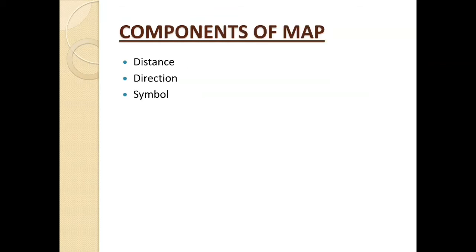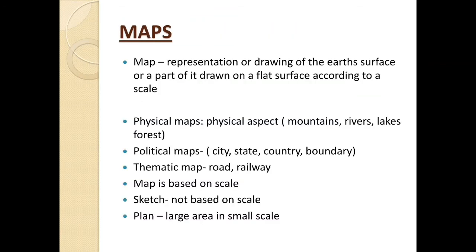There are different types of maps such as physical maps, political maps, and thematic maps. Physical maps explain the physical aspects of a place — if a map shows the mountains, rivers, lakes, and forests of a place, such a map is called a physical map.